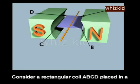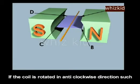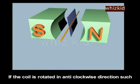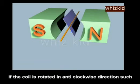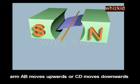Consider a rectangular coil ABCD placed in a magnetic field B due to a horseshoe-shaped permanent magnet SN. If the coil is rotated in an anti-clockwise direction, arm AB moves upwards or CD moves downwards.